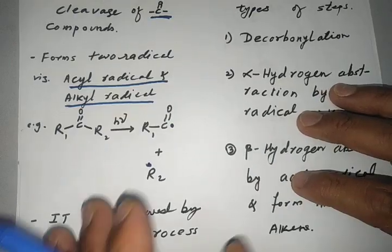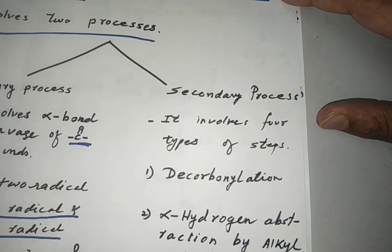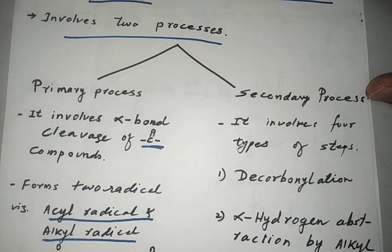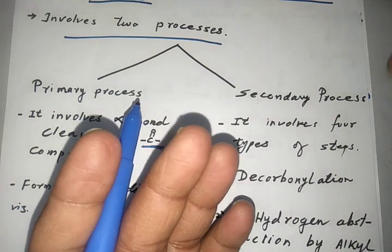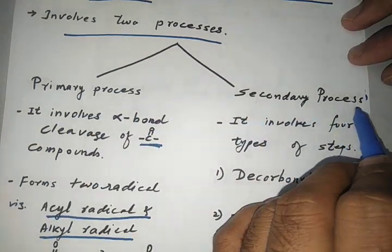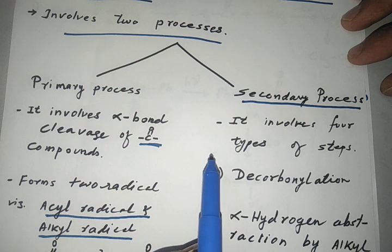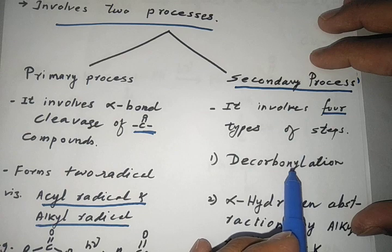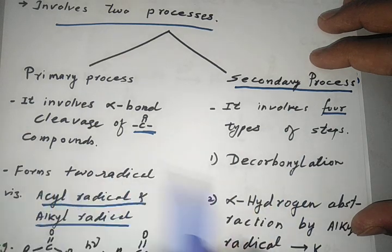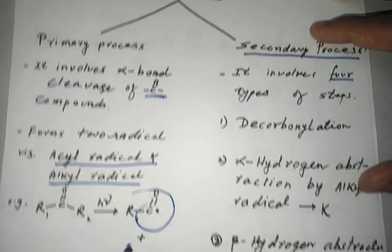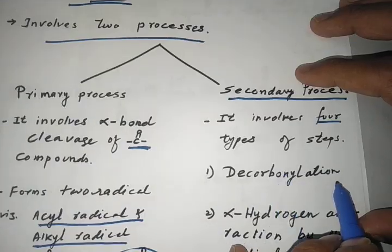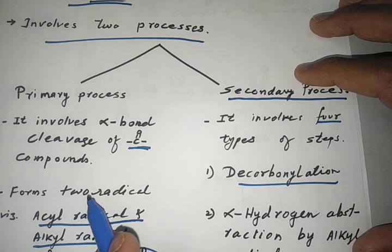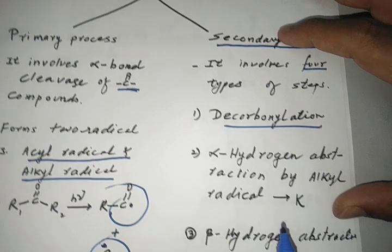Once the primary process is complete — forming the acyl radical and the alkyl radical — the secondary processes begin. The secondary process involves three to four steps. After formation of the acyl radical and alkyl radical, they undergo decarbonylation, followed by recombination to form an alkane or cyclic compound.